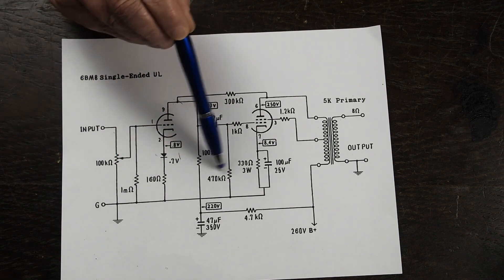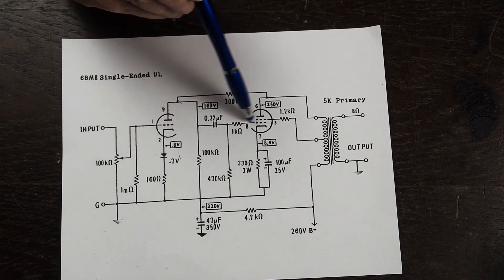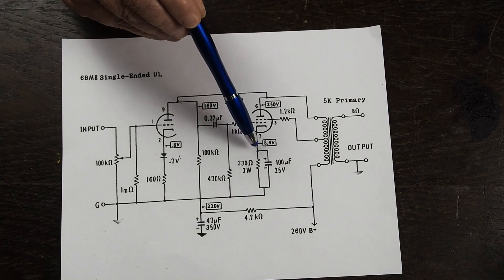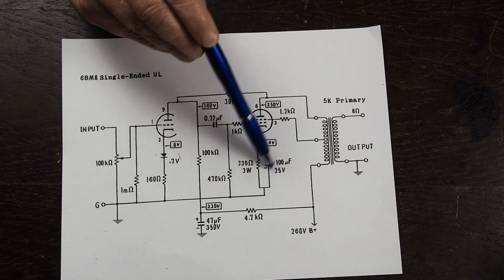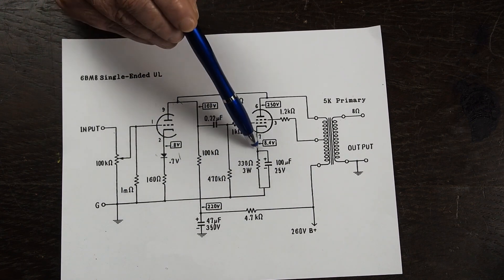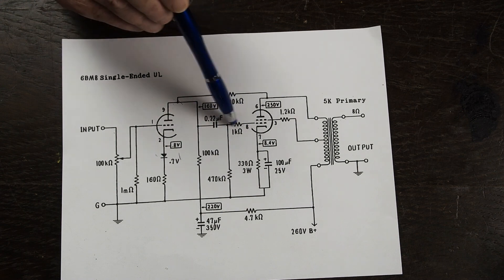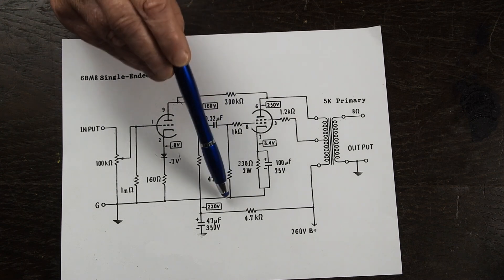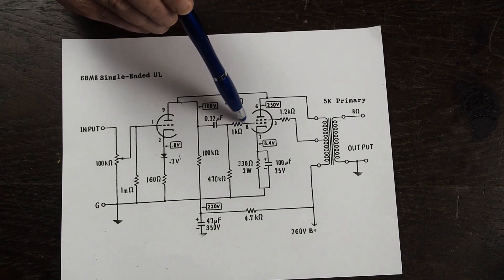Our AC signal is coming through here. Here's our grid leak resistor which is going to provide the bias for this grid. This cathode resistor and bypass capacitor sets the voltage drop between the ground reference and the cathode at 8.4 volts. Because the grid is referenced to ground, the difference between this cathode and this grid will end up with negative 8.4 volts on the grid of the driver tube.